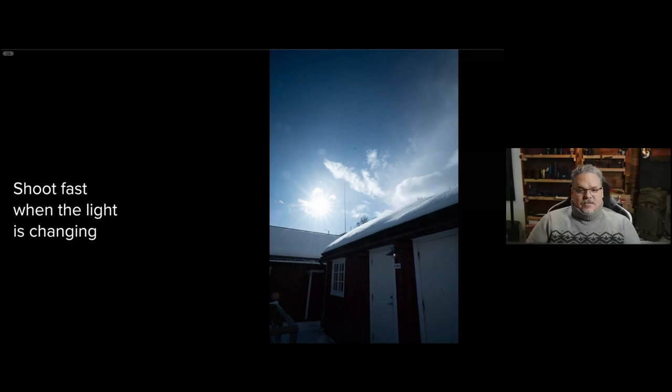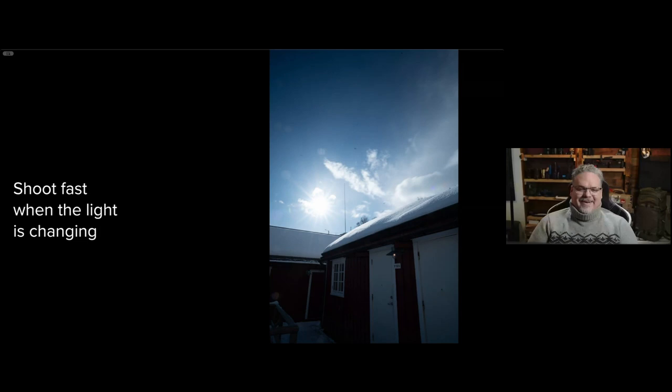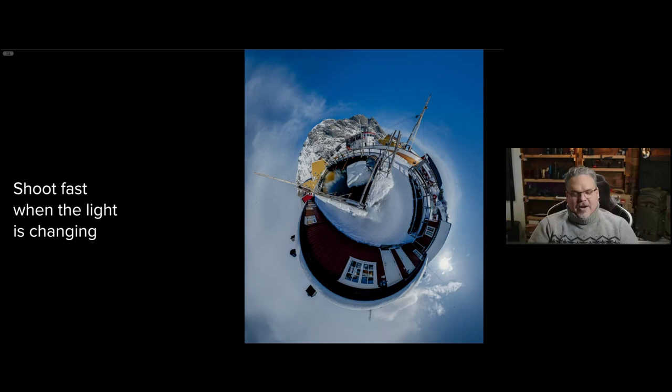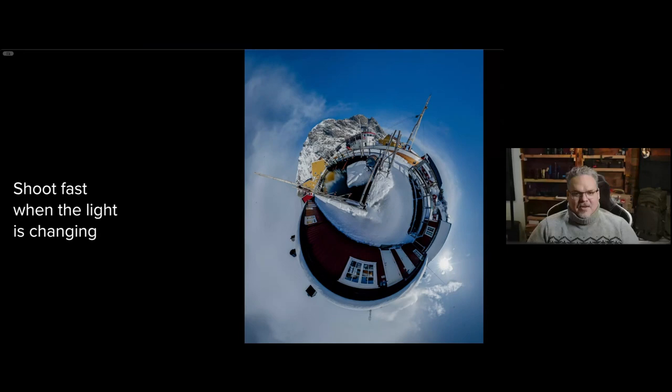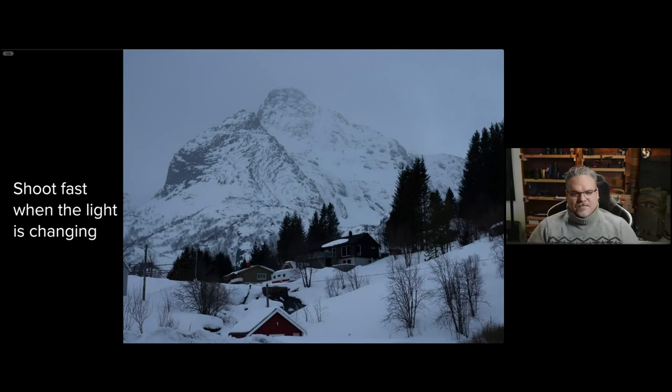Sometimes the light changes quickly, so it's best to have a rig with click stops and a wider lens if possible. I was using a 24mm lens here. This is one frame from a tiny planet that ended up looking like this, but I had to hustle at the end because right after this came a snowstorm and all that beautiful light went away in moments. Shoot fast when the light is changing.